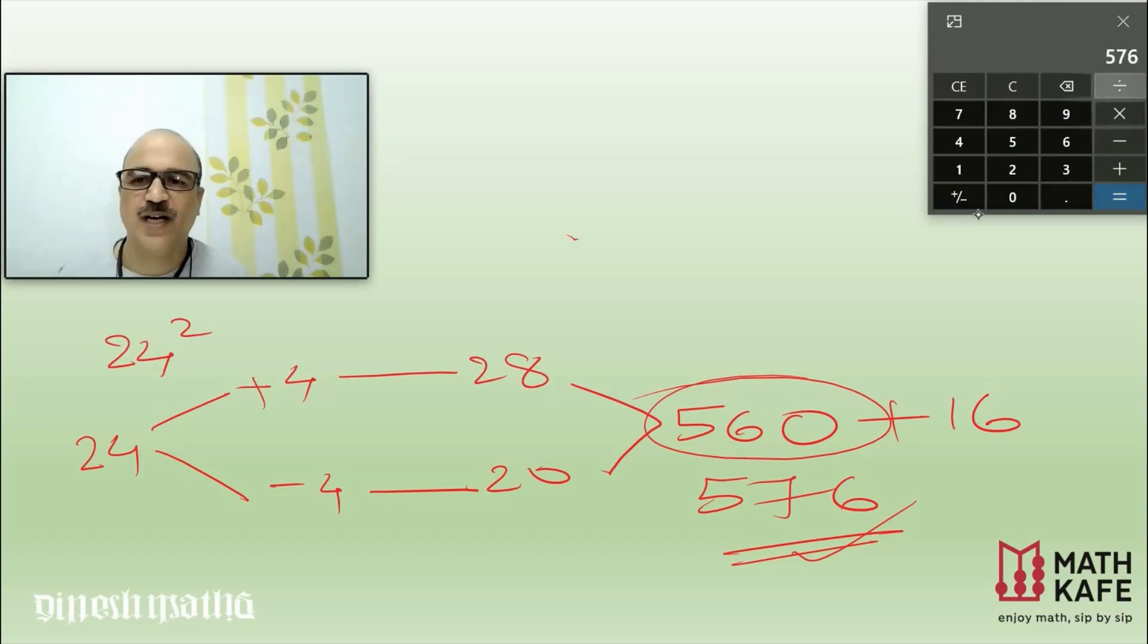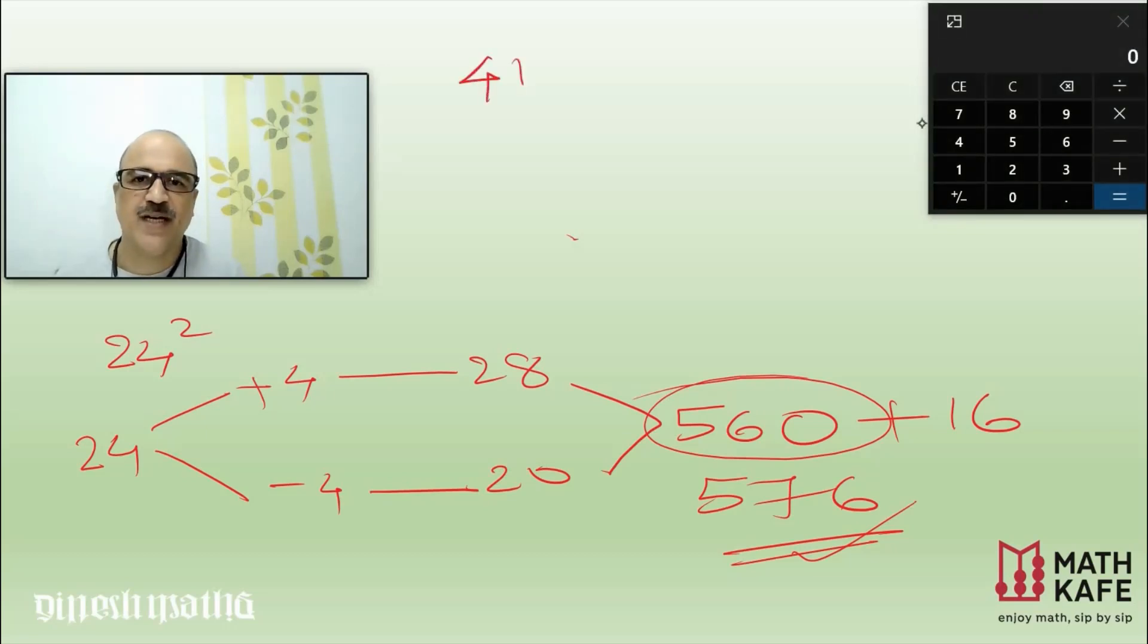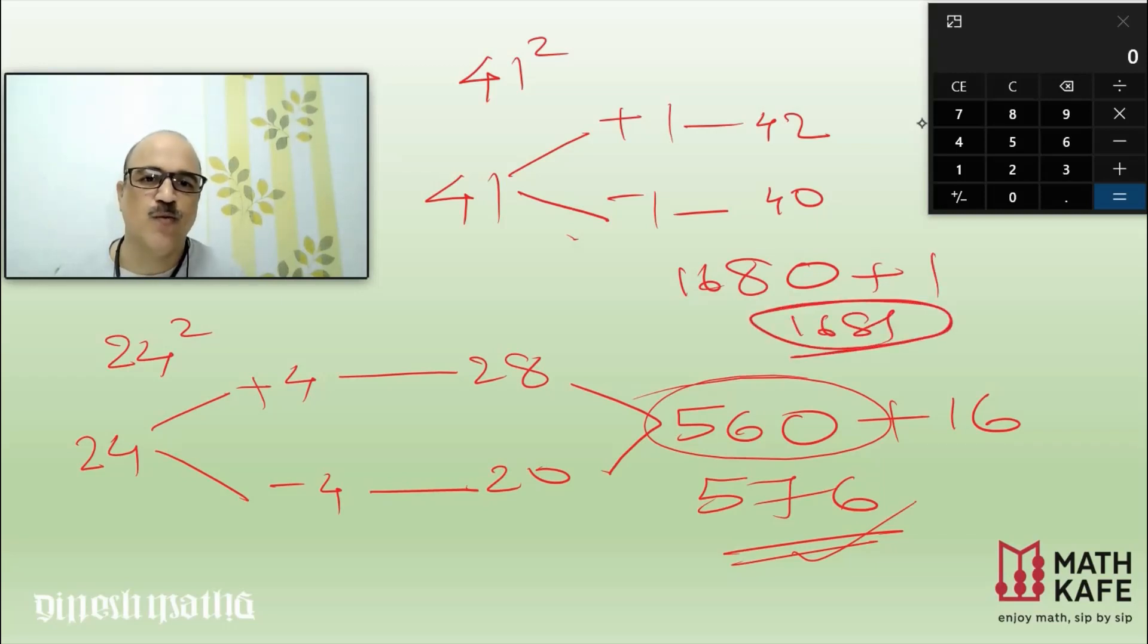Let us quickly check one more number. Maybe I'm trying 41 square. This is more easier - you don't want to write much steps. 41 plus 1, that gives 42, and 41 minus 1, that gives 40. 40 times 42: 0, 4 times 2 is 8, and 4 times 4 is 16, plus 1 square is 1, so it is 1681.